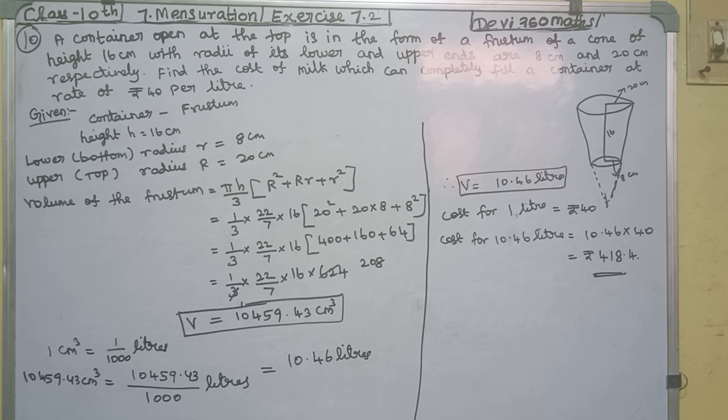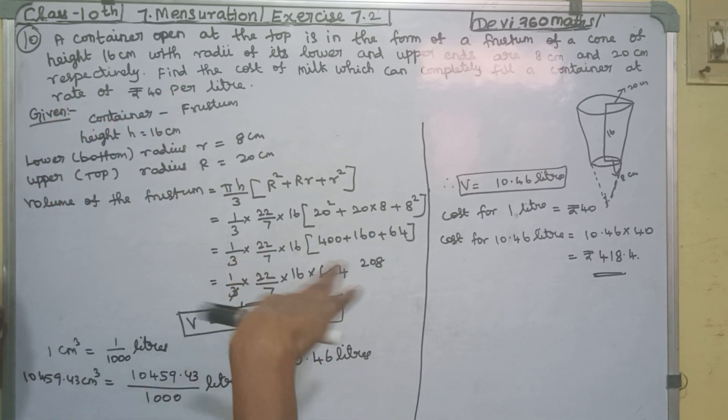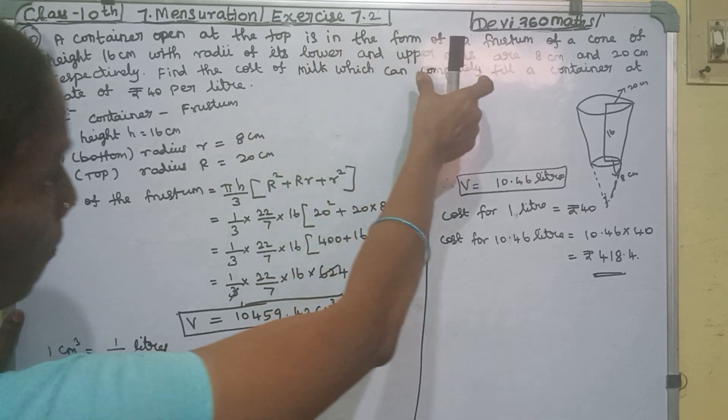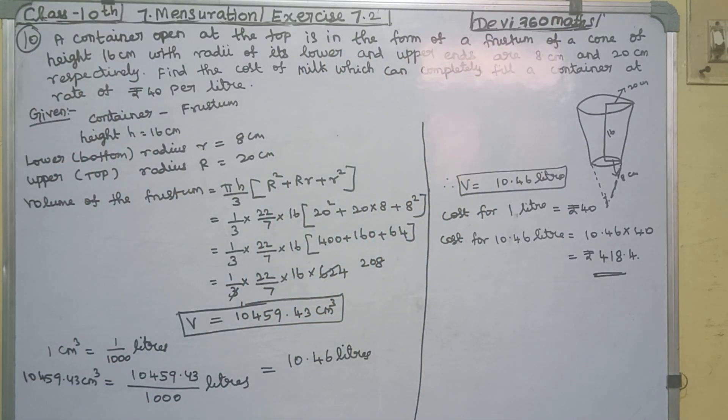What is given? There is a container. The container is in the form of a frustum. The container is open at the top. What is the form of a frustum of a cone? Frustum is open at the top, like a bucket.